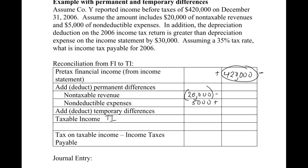The permanent differences net out to negative $15,000. Then we handle the temporary difference of $30,000 for depreciation. Since the deduction on the tax return is greater than the expense on the income statement, we're subtracting a bigger number on the tax return, which makes taxable income smaller — so we subtract that $30,000, and this creates a deferred tax liability (DTL). That brings taxable income down to $375,000. Tax on that is taxable income times the 35% rate, which gives us $131,250.